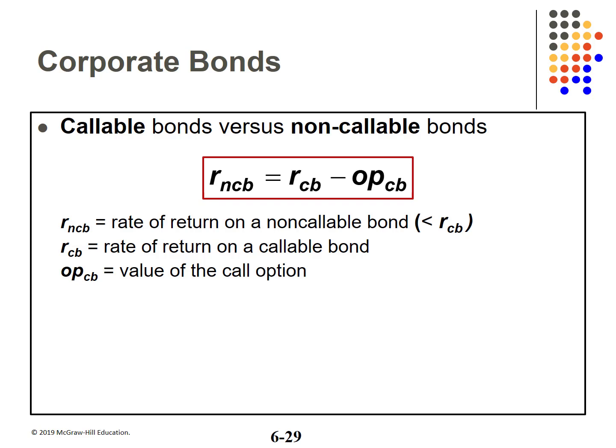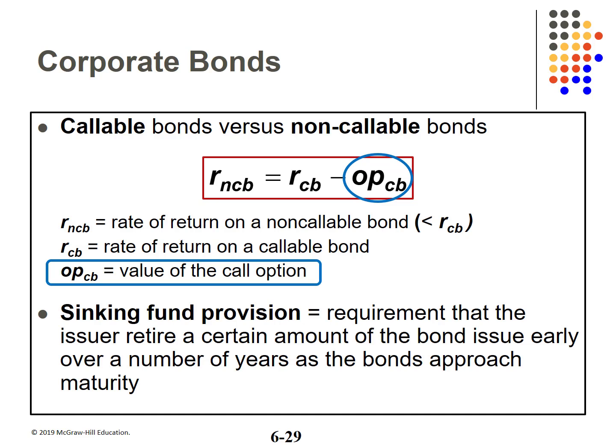Callable bonds have the opposite effect on required return. A call option is not a plus for investors, so they demand a higher return. The value of the call option is the premium required. Some bond issues have a sinking fund provision, which requires the issuer to retire a certain percentage of the bond issue early, usually a percentage each year. The issuer makes small interest payments every six months, then has a huge balloon payment at maturity. If there is concern the issuer cannot make that payment, investors require a higher coupon rate. The sinking fund retires the issue over its life, but may mean bondholders must surrender their bonds much earlier than intended.